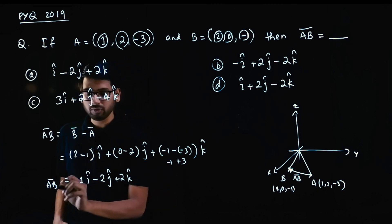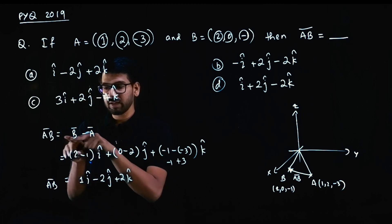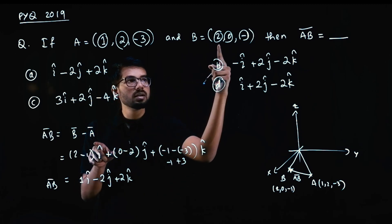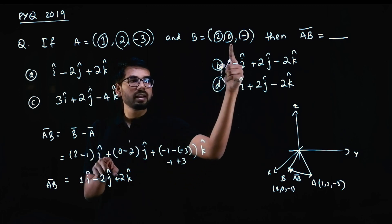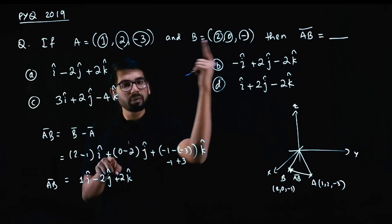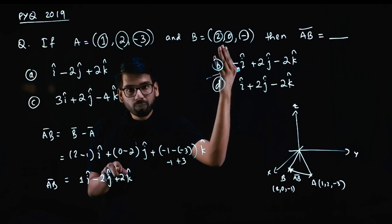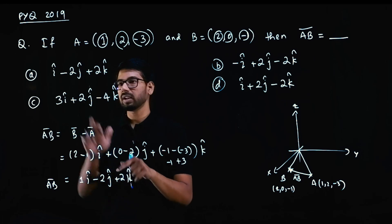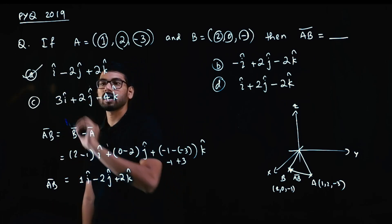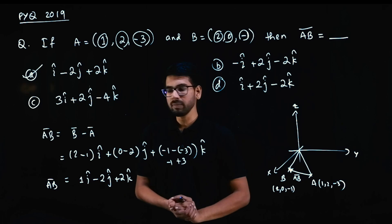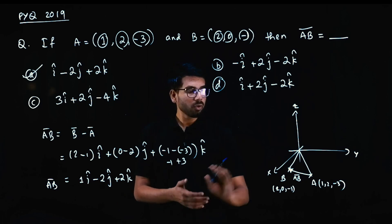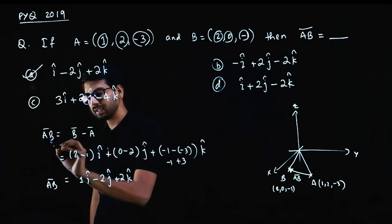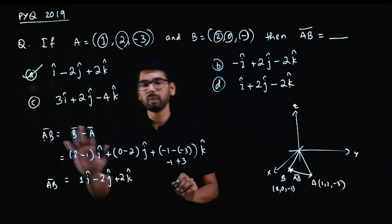So this is the AB vector. AB vector: second letter B minus first letter A. First number minus first number into i cap, second number minus second number into j cap, third number minus third number into k cap. So B minus A gives us: option A is the answer — i minus 2j plus 2k. Very simple question.